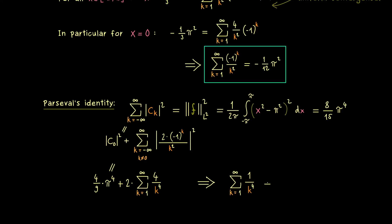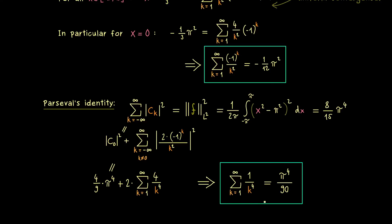We get a sum formula for this nice sum — you just have to calculate with some fractions. Dividing by the factor 8, we get the sum formula for 1/k⁴, which equals π⁴/90. By using the same Fourier series as before, we got a second nice sum formula — another surprising gift from Fourier series theory.